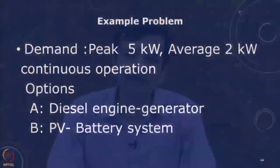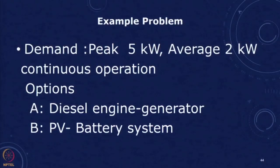An average requirement of 2 kW means throughout the day the average power rating is 2 kW, and we are looking at continuous operation of the telecom tower. We want to consider the economics of two options: Option A uses a diesel engine generator, and Option B uses a PV battery system. In both cases we presume there is no grid supply — this is a standalone supply designed to meet the average requirement of 2 kW.